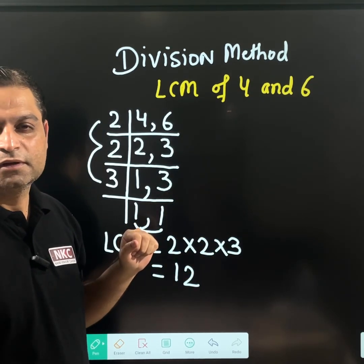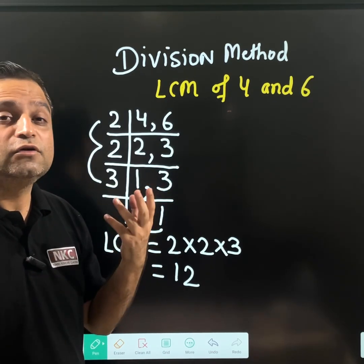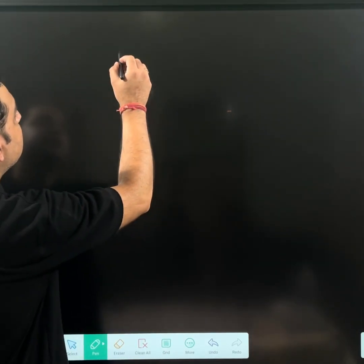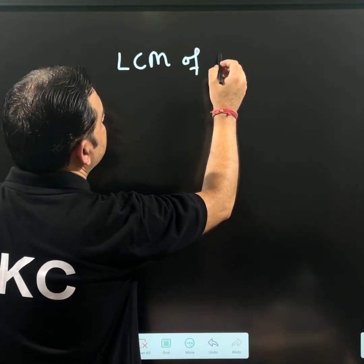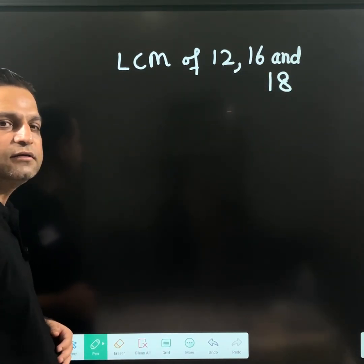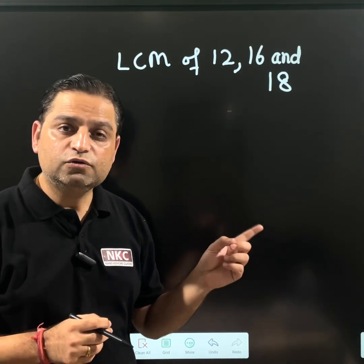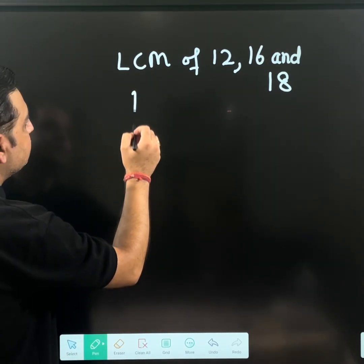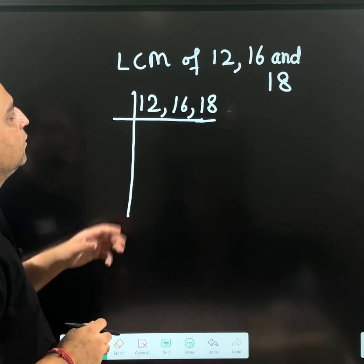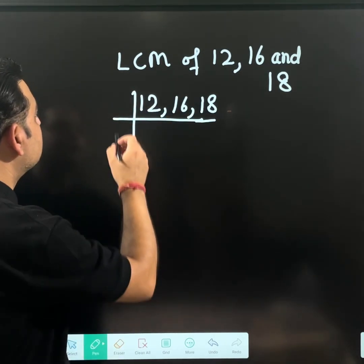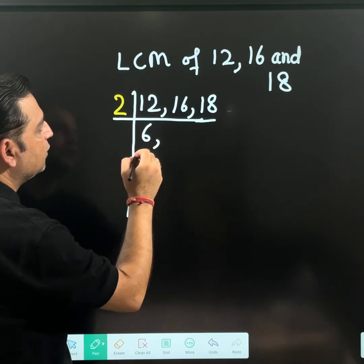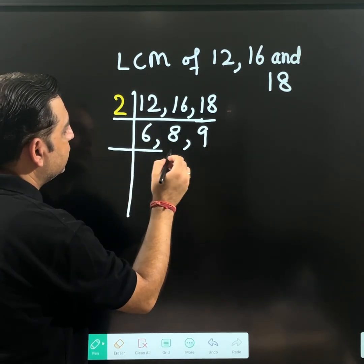I am going to cover one more question. It is not only for a single value — you can find the LCM of multiple numbers as well. Let us suppose you want to find LCM of 12, 16, and 18. For these 3 numbers, I want to find LCM using the division method by dividing with primes. It becomes very easy — you need not write tables. All numbers are divisible by 2, and my first prime is 2. So I will take prime 2. 2 times 6 is 12, 2 times 8 is 16, 2 times 9 is 18.